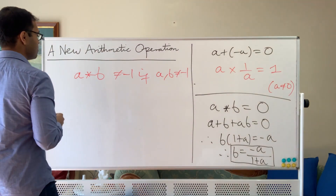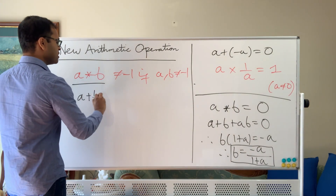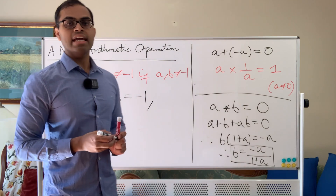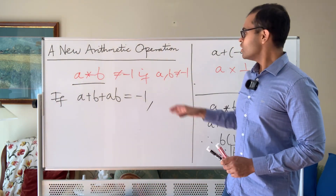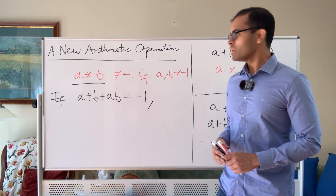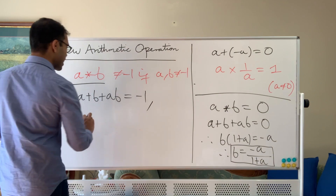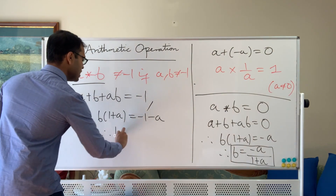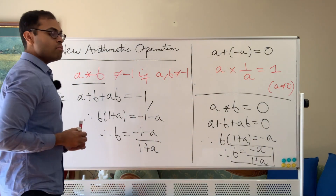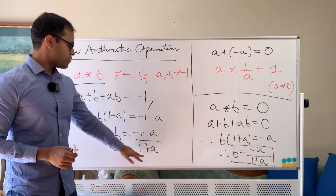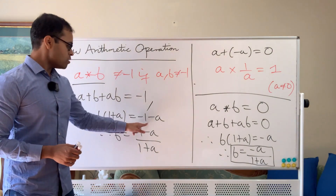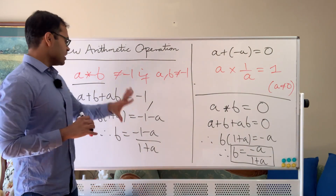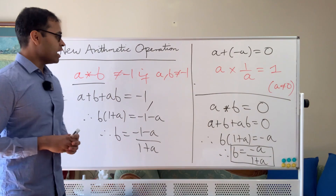To show it's a closed system, we have to show that a star b is not equal to minus 1 if a and b are not equal to minus 1. We know a star b equals a plus b plus ab. Suppose it equals minus 1. Then b times (1 plus a) equals negative 1 minus a, so b equals (negative 1 minus a) over (1 plus a). If a is not minus 1, this is well defined, but that implies b equals negative 1, because the numerator is the negative of the denominator. So if neither a nor b is minus 1, the result couldn't be minus 1. That shows it's a closed system.